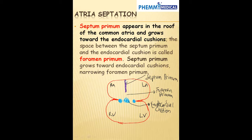How are we going to form the atrial septum? From the roof of the common atrium, we have our septum growing downward towards the endocardial cushion. Because this is the first septum growing from the roof of the common atrium, we call it the septum primum. As it's growing towards the endocardial cushion, the space between the septum and the endocardial cushion — because it's the first foramen — we want to call it the foramen primum.